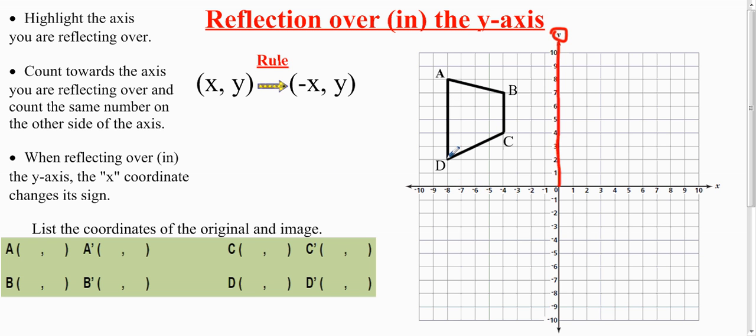Point A is at negative 8, 8—so negative 8 to the left and 8 up. B is negative 4 to the left and 7 up, so the x is negative 4 and the y is 7.